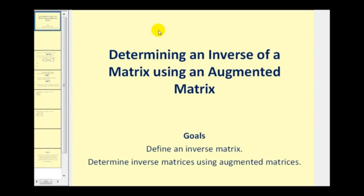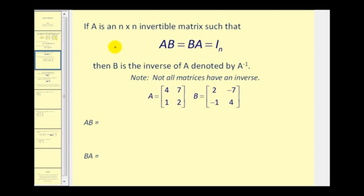Welcome to a video on determining the inverse of a matrix using augmented matrices. If A is an n by n invertible matrix such that A times B equals B times A, which equals the identity matrix, then B is the inverse of A, denoted with inverse notation.